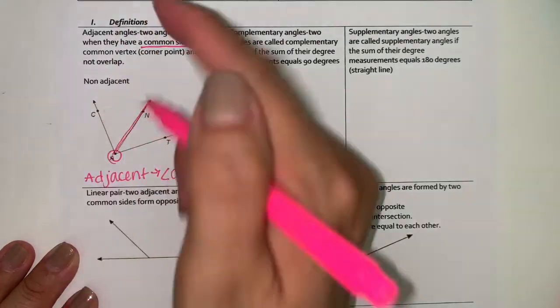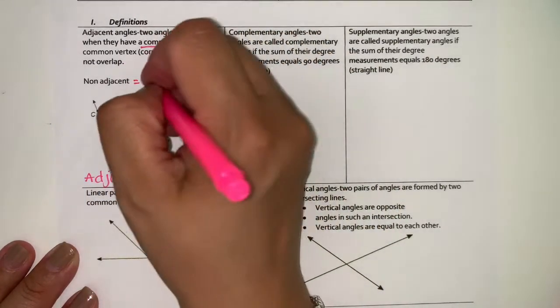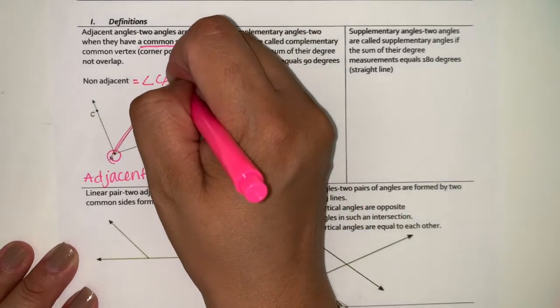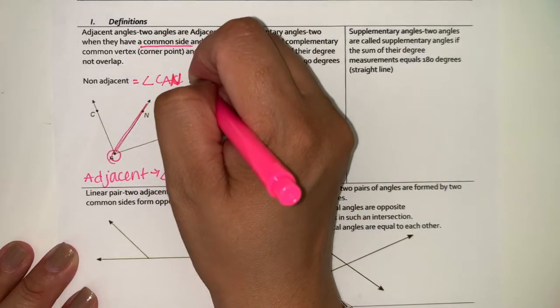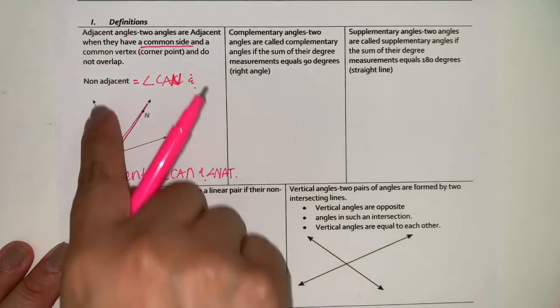Your non-adjacent angles are a second example. We would see CAN is not adjacent to CAT.